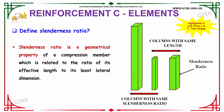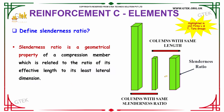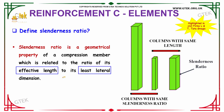Our next question is: define slenderness ratio. Slenderness ratio is a geometrical property of a compression member related to the ratio of its effective length to its least lateral dimension.